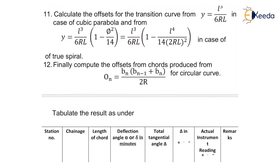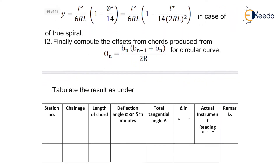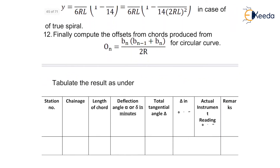And lastly, we have to tabulate the results, which includes the station number, the chain age of point, the length of chord, the deflection angle alpha for the transition curve, and delta for the circular curve in minutes.